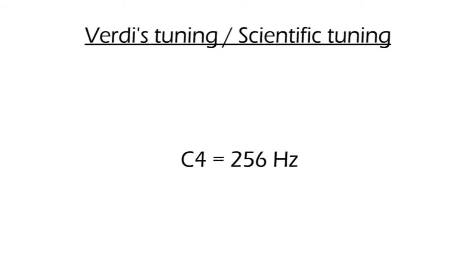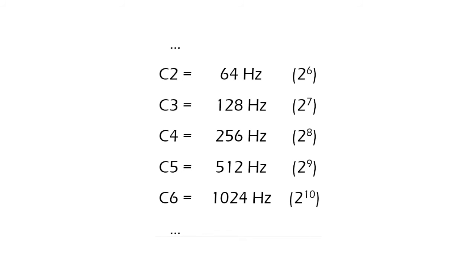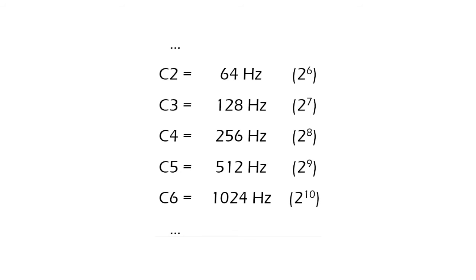Another example is Verdi tuning, also known as scientific tuning, which is based in C4 equals 256 Hz. It is designed so that all C notes are powers of 2, and it has Pythagorean tuning intervals whose ratios are formed only with powers of 2 and powers of 3.